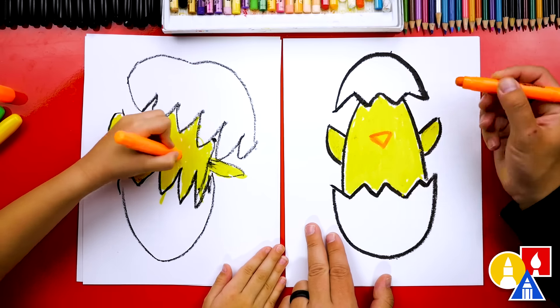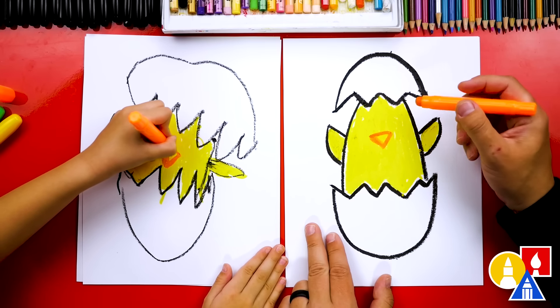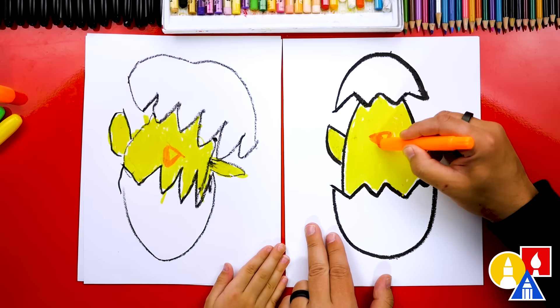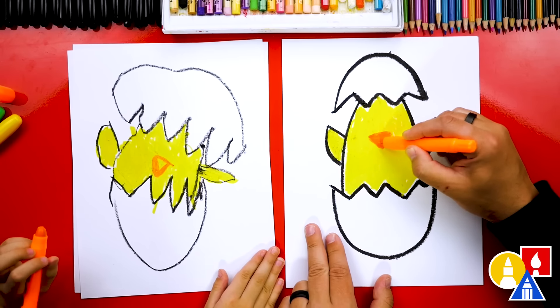And then we can draw the top of the beak. Looks like an upside down triangle. And then we're going to color in that triangle shape. So it's solid.